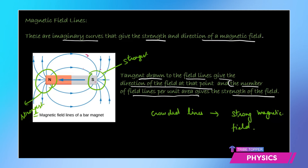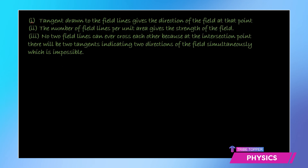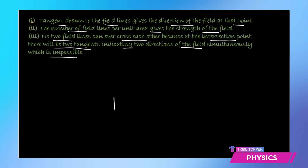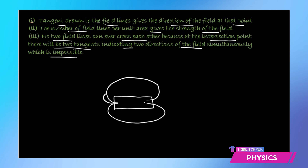There are three important properties of magnetic field lines. First, the tangent drawn to the field lines gives the direction of the field at that point. Secondly, the number of field lines per unit area gives the strength of the field. And very importantly, no two field lines can ever cross each other, because at the intersection point there will be two tangents indicating two directions of the field simultaneously, which is impossible. So if you have a magnet and these are the magnetic field lines, they will never cross each other, because at the point of intersection one tangent will be drawn this way and one tangent this way, indicating two directions of the field at the same time — and that is impossible. So no two magnetic field lines can intersect each other.